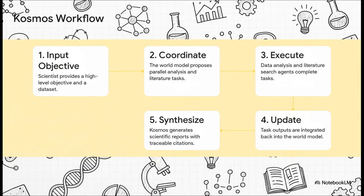The system operates in a closed loop. A scientist provides a high-level objective and a dataset. The world model then coordinates parallel analysis and literature tasks, which are executed by specialized agents. The outputs from these tasks are summarized and integrated back into the world model, which then updates its understanding. This process iterates until Cosmos generates final scientific reports, with traceable citations for every claim.